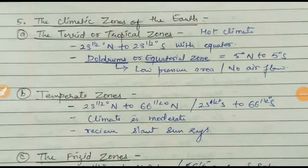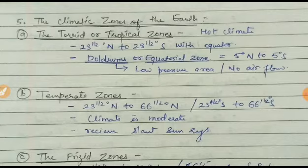Hello students, I hope you all are fine at your home. Last time we started the topic of latitude and longitude — sometimes it is also called 'longitude', so don't be confused, both pronunciations are right. Today I am going to explain the second part: the climatic zones of the Earth. This is the second lecture, and latitudes are a very important part of understanding these zones.